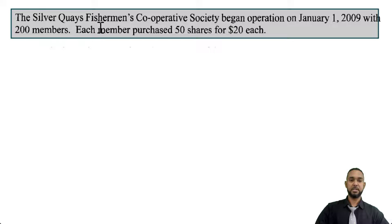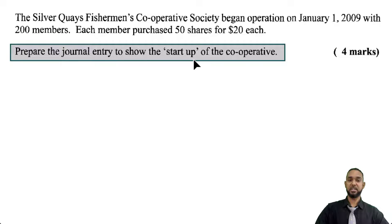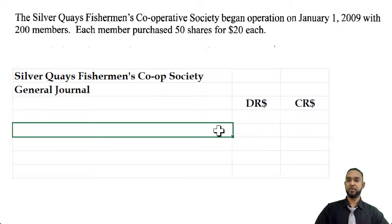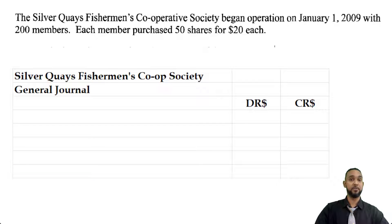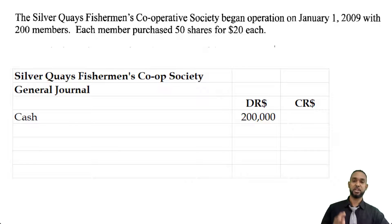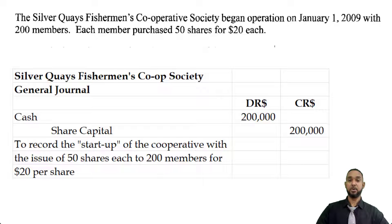Part B says the Silver Keys Fisherman's Cooperative Society began operation on Jan 2009 with 200 members. Each member purchased 50 shares for $20 each. We're required to prepare the journal entry to show the startup of the cooperative. With journal entries, debit entries come first, followed by indented credit entries, and you have a narration describing the transaction. Since we're issuing shares and collecting money, cash or bank increases — debit the asset. 200 members × 50 shares × $20 = $200,000. So debit cash/bank $200,000 and credit share capital $200,000. This records the startup with the issue of 50 shares each to 200 members at $20 per share.